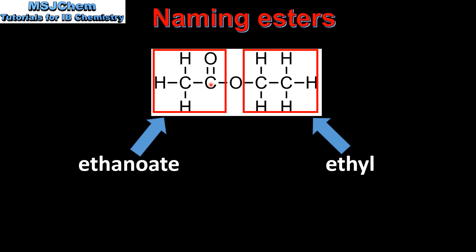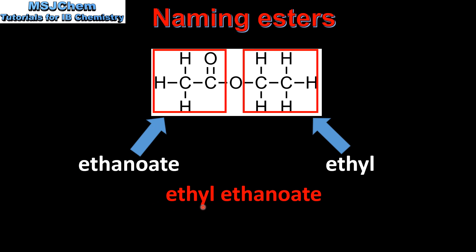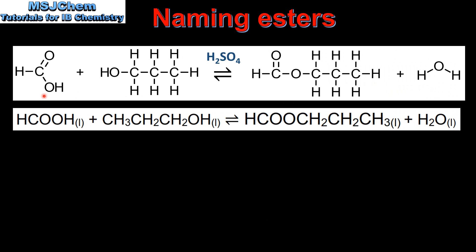The alcohol part comes first, so the name of the ester is ethyl ethanoate. Let's try one more example. In this reaction we have methanoic acid reacting with propan-1-ol.